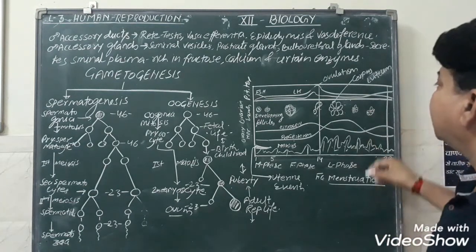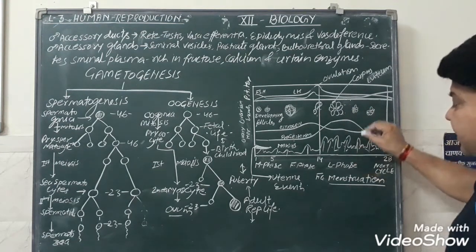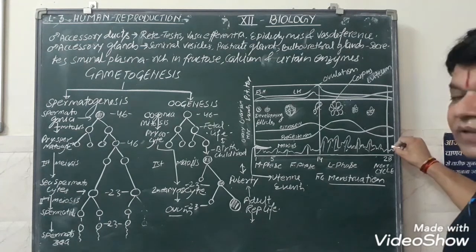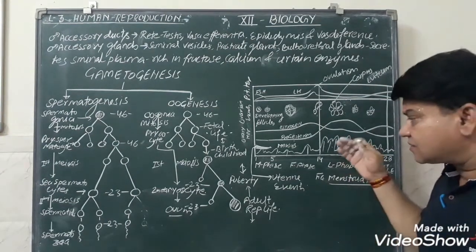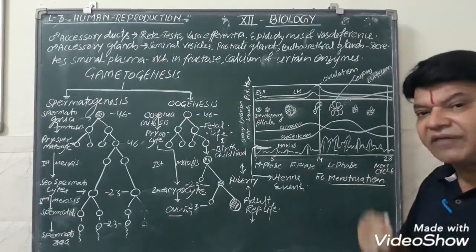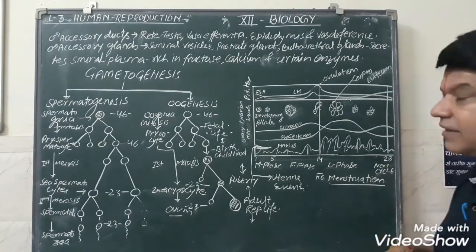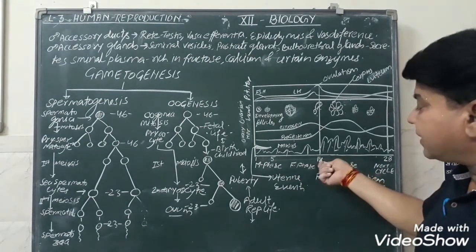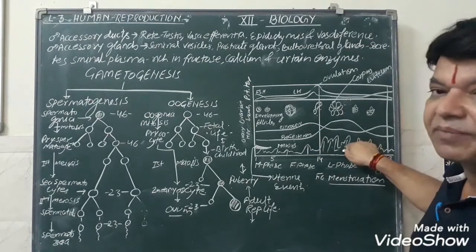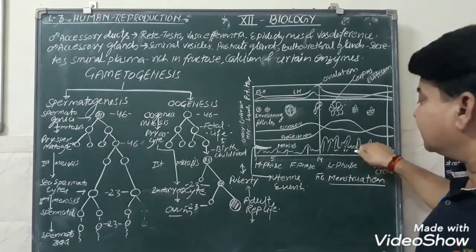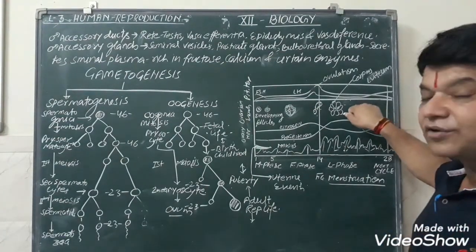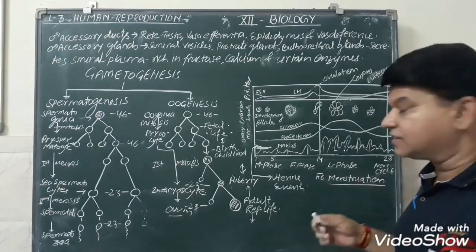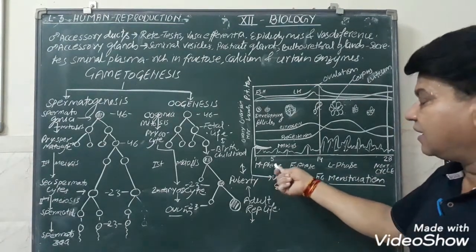The corpus luteum functions as an endocrine gland, secreting estrogen and progesterone. After around 16 to 19 days, the corpus luteum gets degenerated and the next cycle starts at day 28. This is the cyclic change in human females which repeats every month, hence called the menstrual cycle or monthly cycle. Regarding uterine events: the uterine cells are less developed initially, but at day 14 they are more developed, prepared for implantation.